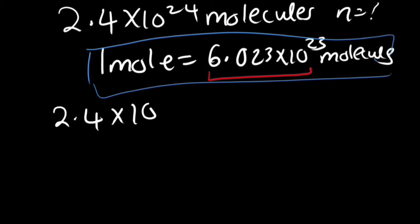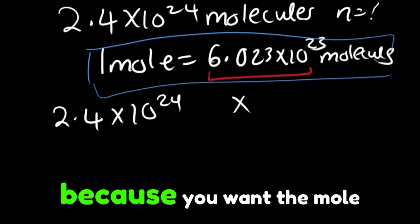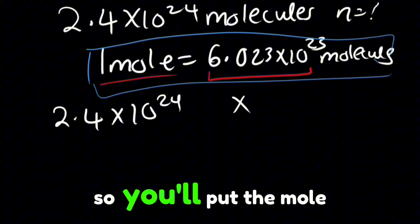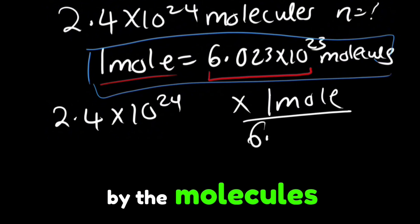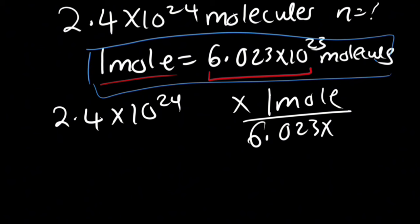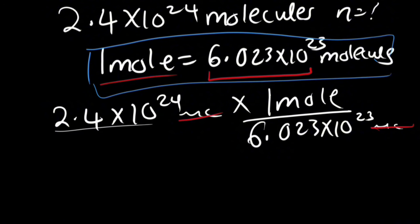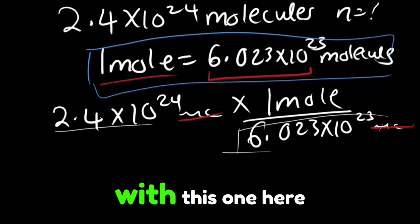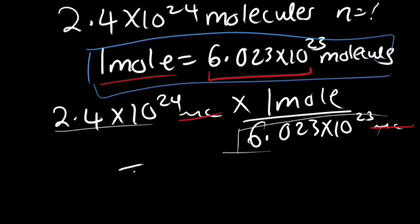We'll take 2.4 times 10 power 24 molecules which we have and then we'll multiply because you want the mole here, so you'll put the mole on top and then you will divide by the molecules which is 6.023 times 10 power 23 molecules. So the molecules and the molecules will cancel out and then you'll divide 2.4 times 10 power 24 with this one here and then you will get the number of moles as 4 moles.